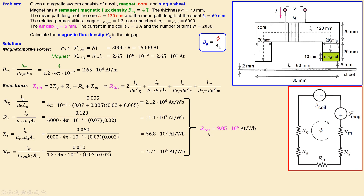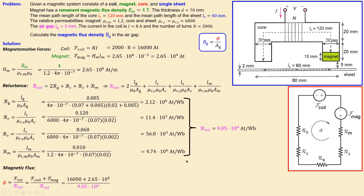With the total reluctance and both sources known, the magnetic flux is calculated as total MMF divided by total reluctance. Adding the coil and magnet MMFs in series and substituting the values gives a flux phi of 4.70 × 10⁻³ Webers.